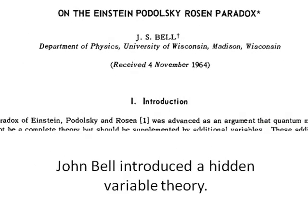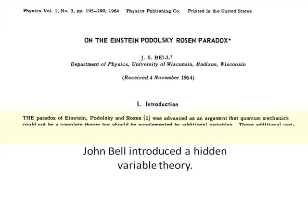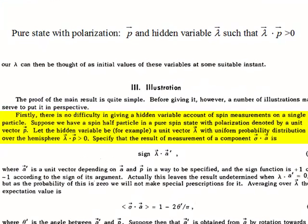We have seen Bell's most famous paper before. Let us see what he did regarding subquantum mechanics. He simply assumed that a pure spin is described by a single polarization vector P and a hidden variable lambda.